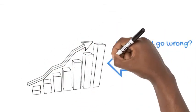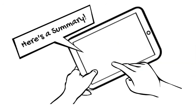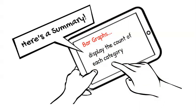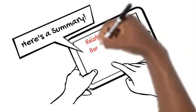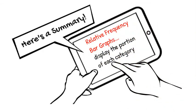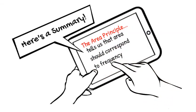People love to use flashy 3D bar graphs. However, adding a third dimension also messes with our perception of the size of each bar. 2D bar graphs give a more accurate picture of our data. Here's what we've learned in this video: bar graphs display the count of each category, relative frequency bar graphs display the portion or percent of each category, and the area principle tells us that the area should correspond to the magnitude of frequencies.